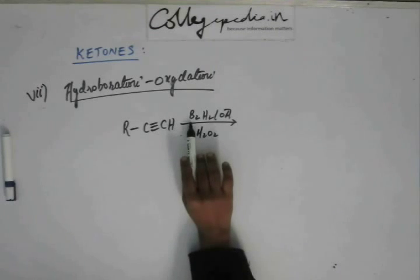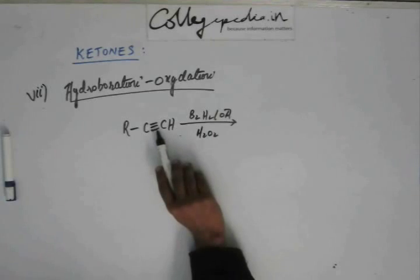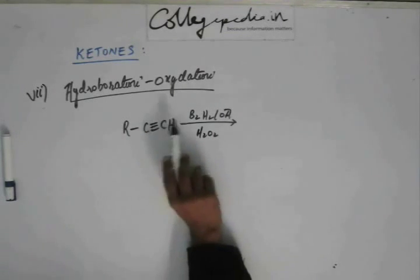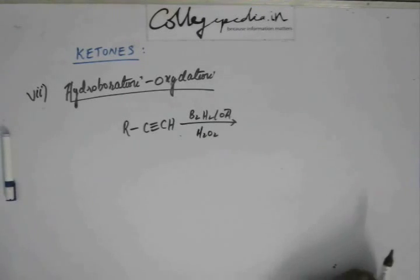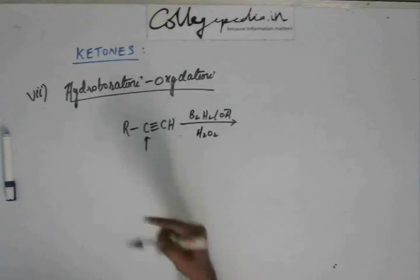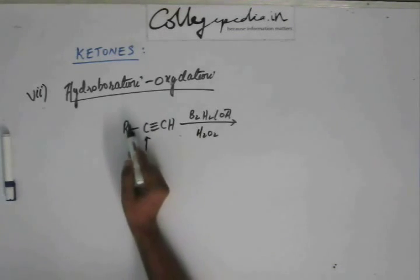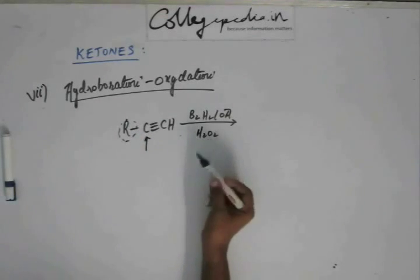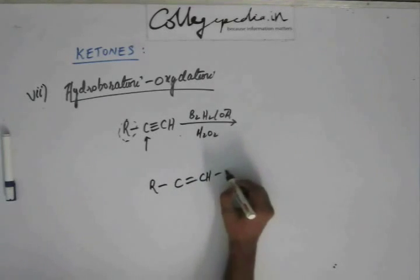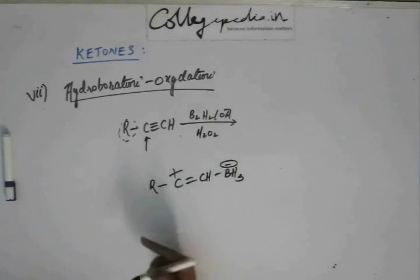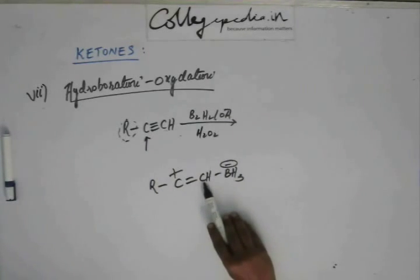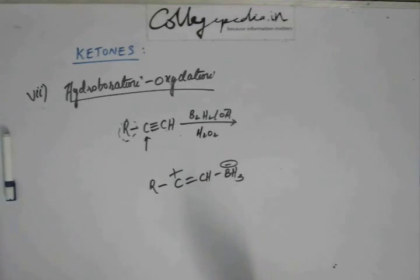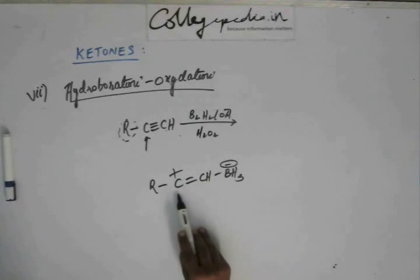Boron has an empty orbital and the electron density from one of the pi bonds of the triple bond goes into that empty orbital. So one carbon starts to form a bond with boron — the terminal carbon bonds to boron — while the other, internal carbon generates a positive charge, stabilized by the R group. So the external terminal carbon forms a bond with boron and the internal carbon gets the plus charge.